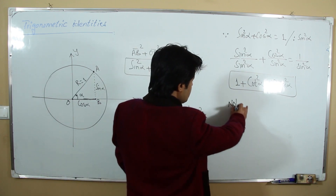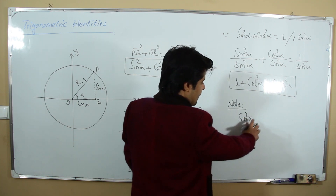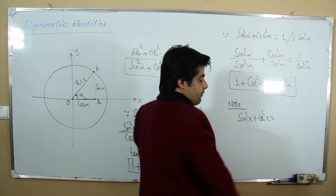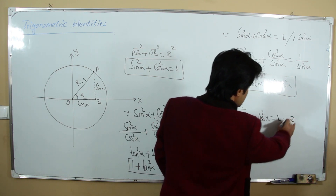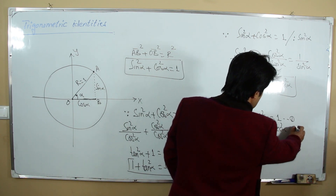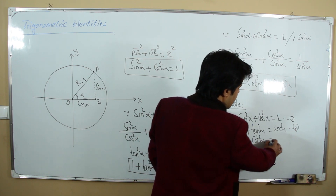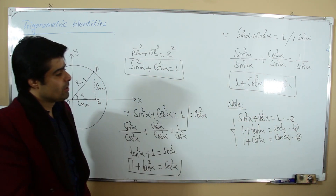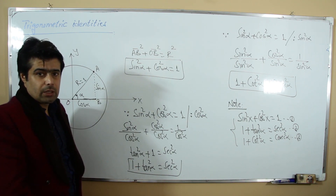So we can summarize: the first relation is sin²x + cos²x = 1; the second relation is 1 + tan²α = sec²α; and the third relation is 1 + cot²α = csc²α. These are our three fundamental identities. We can also prove these three relations using trigonometric lines — another method.